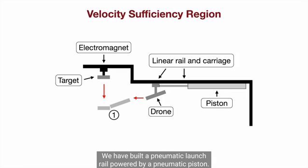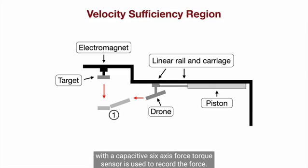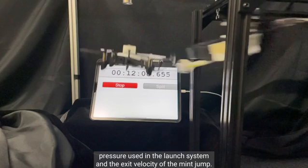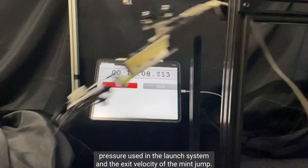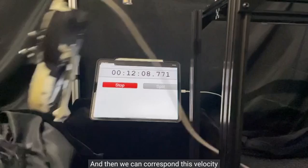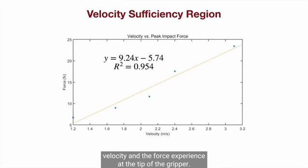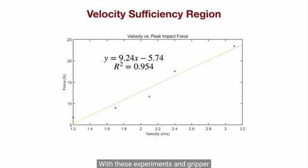We have built a pneumatic launch rail powered by a pneumatic piston. An instrumented dummy gripper with a capacitive 6-axis force torque sensor is used to record the force. So first, we do this many times to establish a relationship between pressure used in the launch system and the exit velocity of the mini drone. And then we can correspond this velocity to the peak force measured by the sensor to form the relationship between relative velocity and the force experienced at the tip of the gripper.